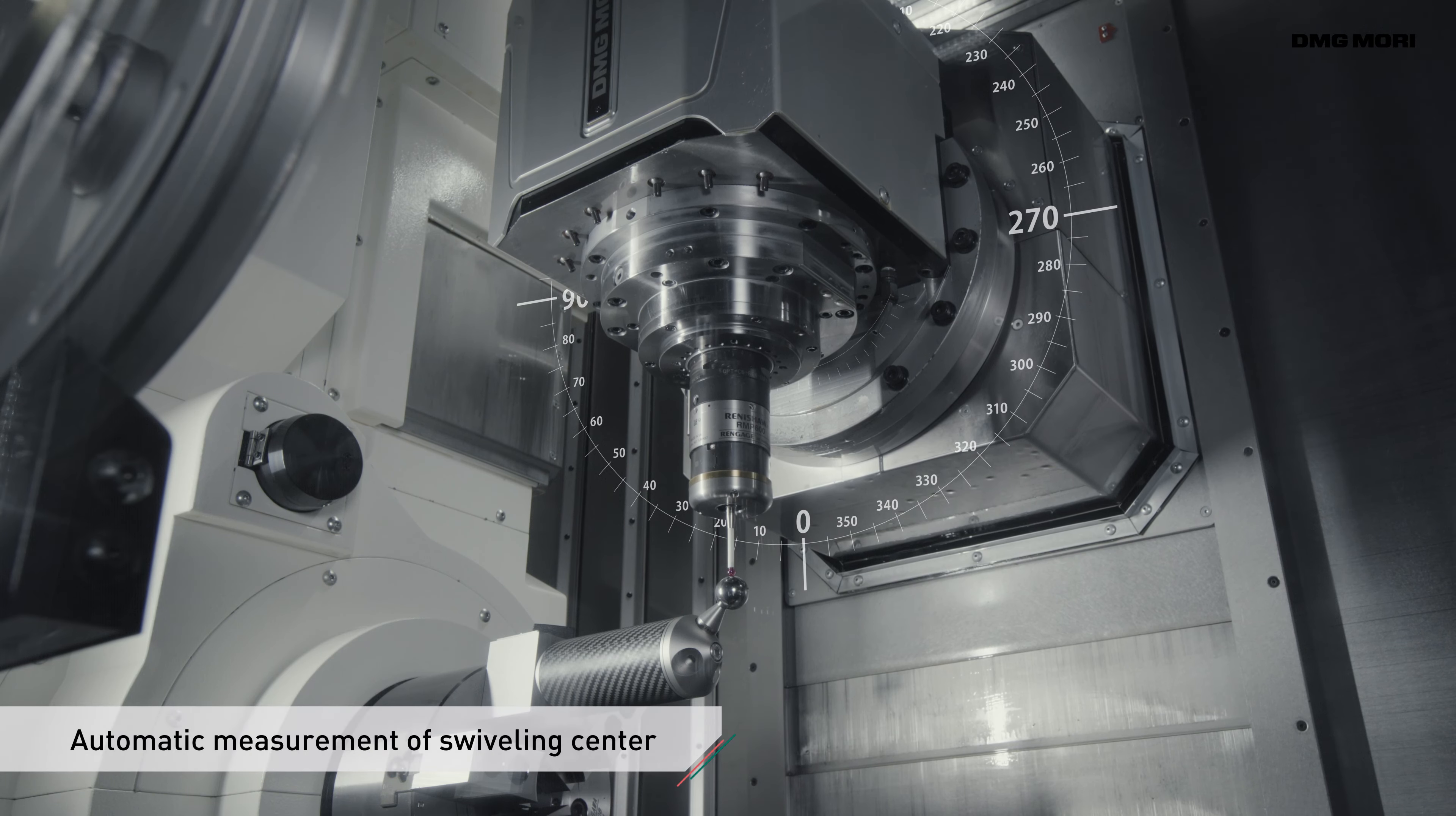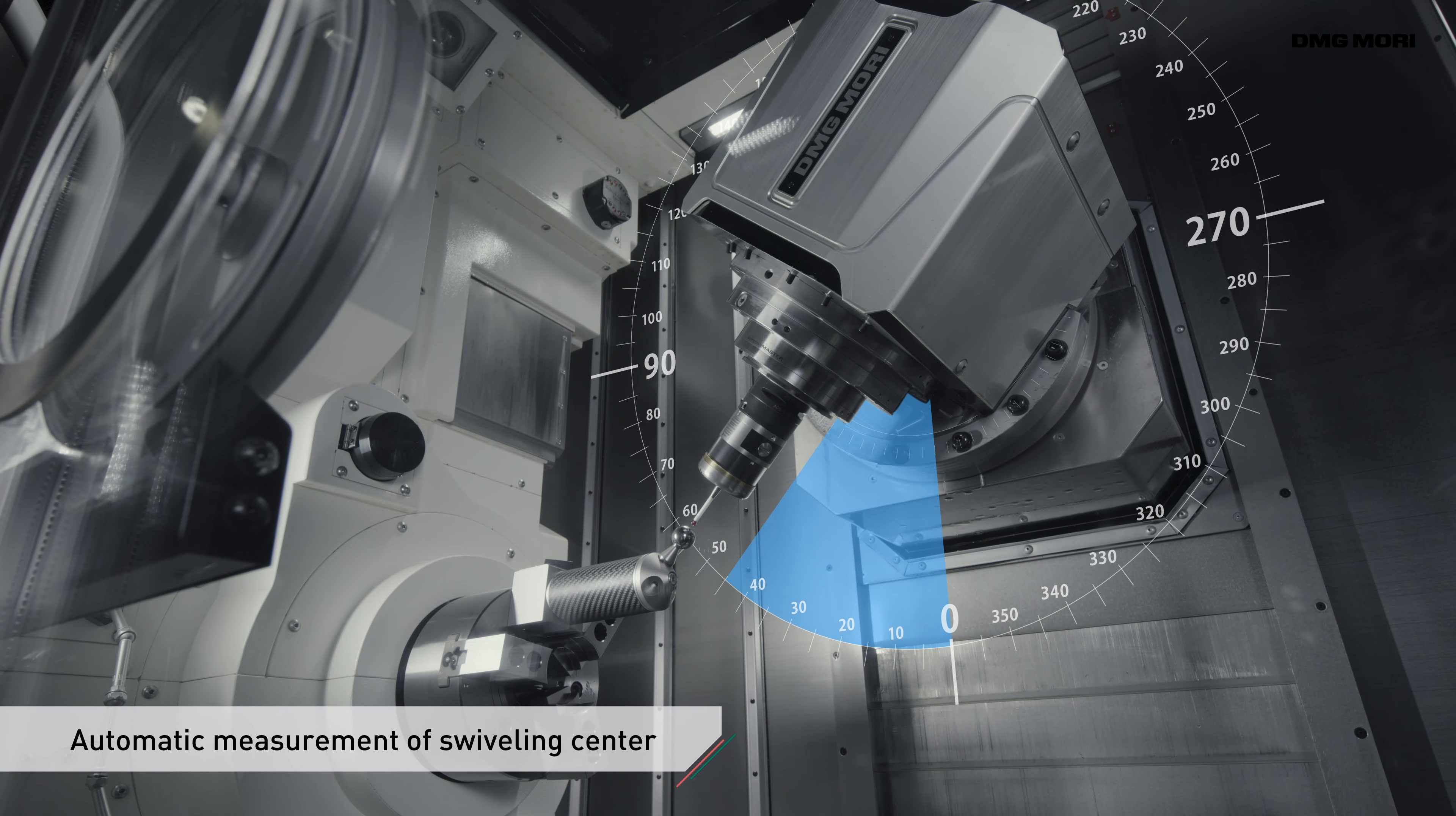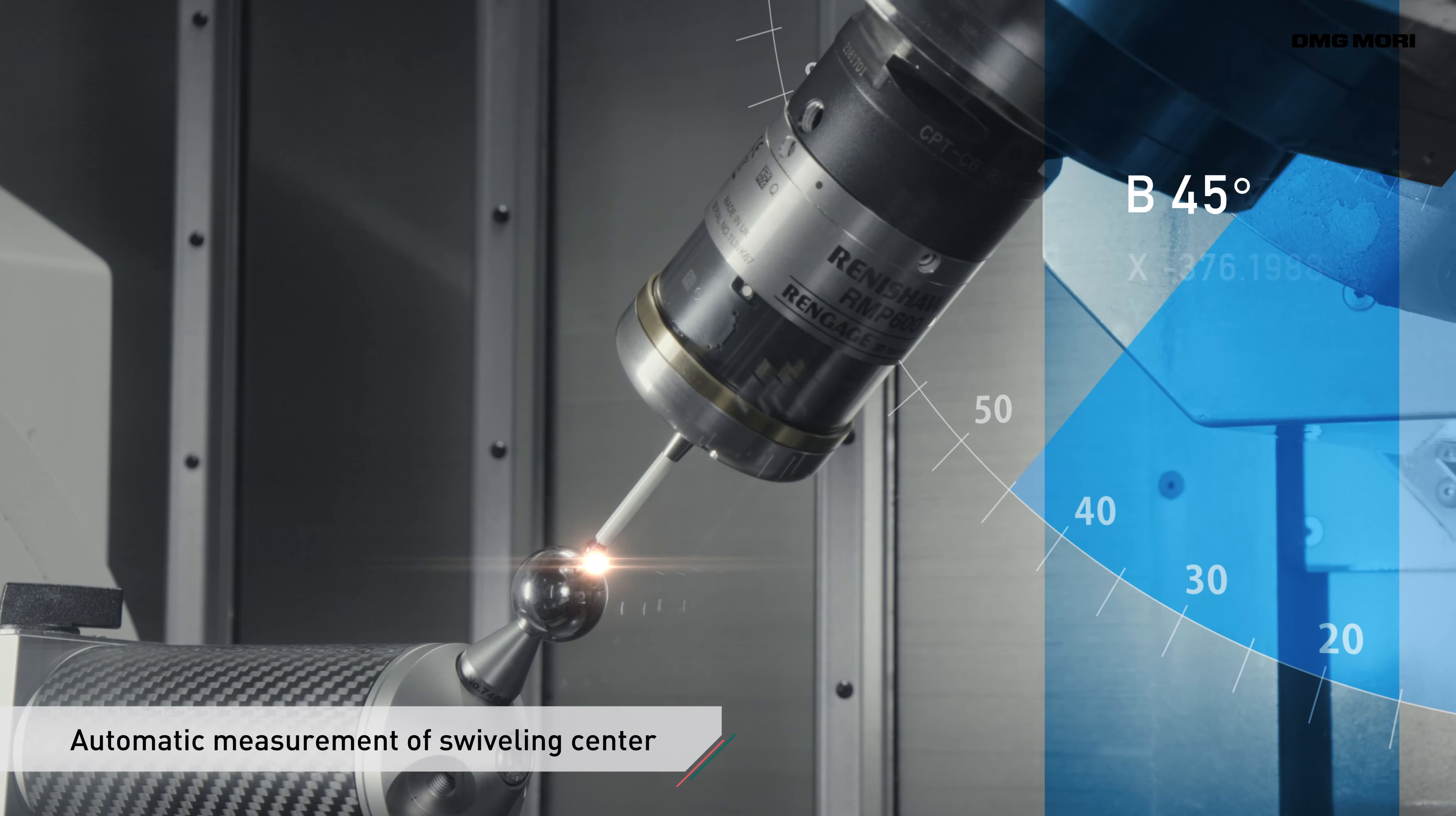To measure the swiveling center of the B-axis, the operator simply places the touch probe on the calibration sphere while moving the B-axis.